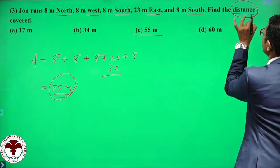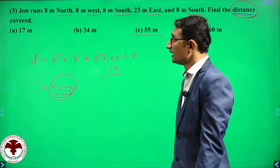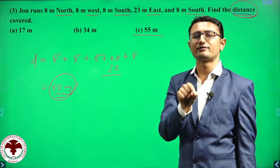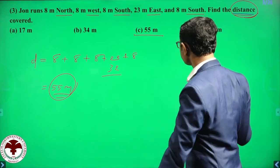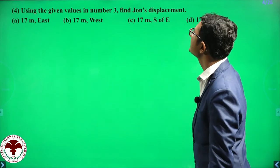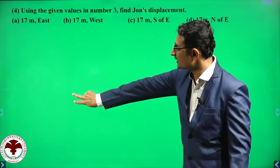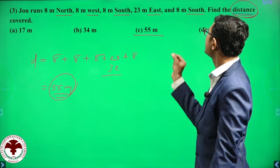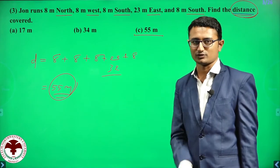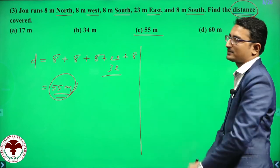But if there is a question of displacement, then you have to care about the directions. Now the next question uses the same values — find John's displacement. Since we are finding displacement, we must care about direction.